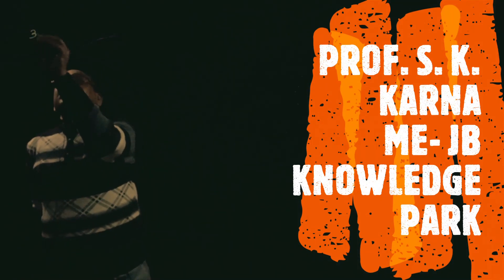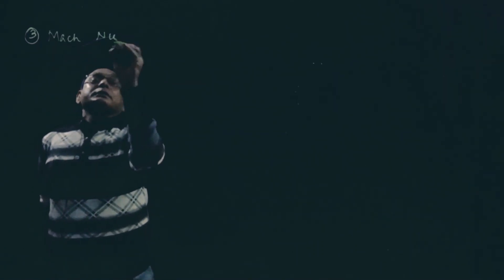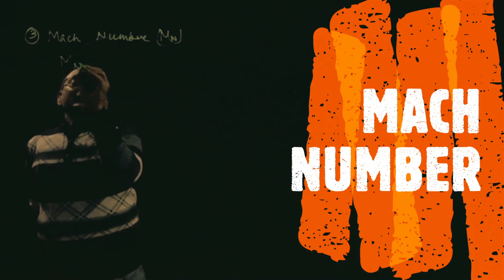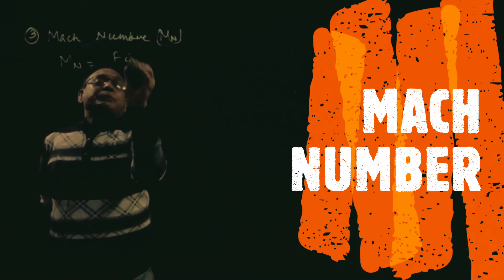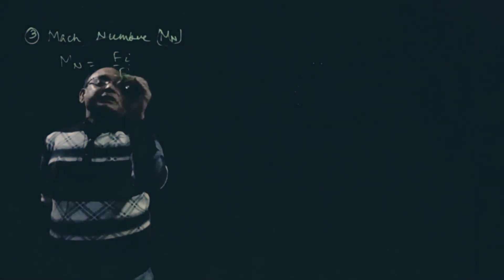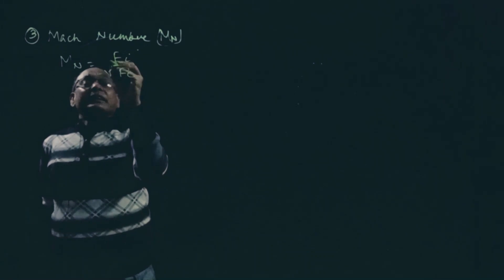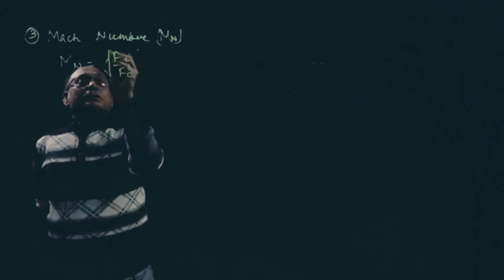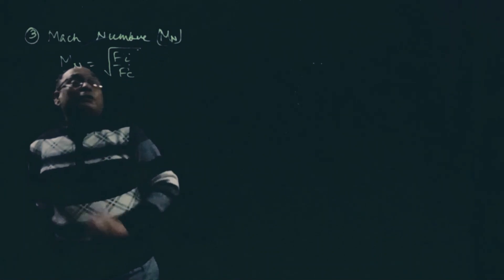The third number is Mach number, denoted by Mn. Mach number is equal to the square root of Fi by Fc. This we have already discussed in fluid properties.